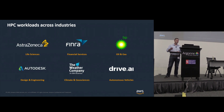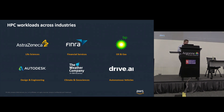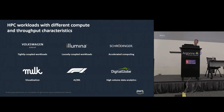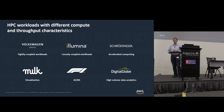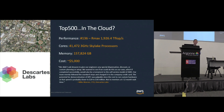What market segments and industries are using HPC on AWS? Take your pick: oil and gas, design and engineering, genomics — it's across multiple market segments. It's also various use cases, from tightly coupled workloads requiring low-latency fabric, to high-throughput computing, loosely coupled workloads, all the way down to high-volume data analytics.